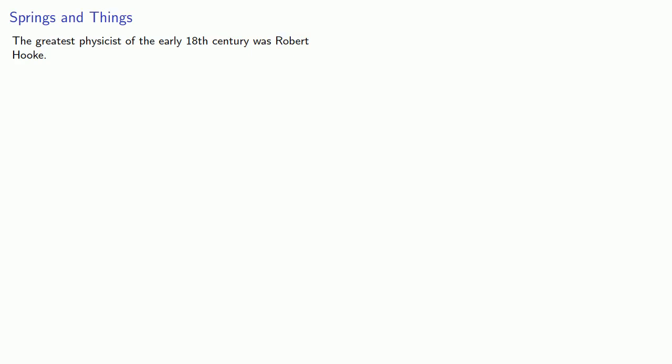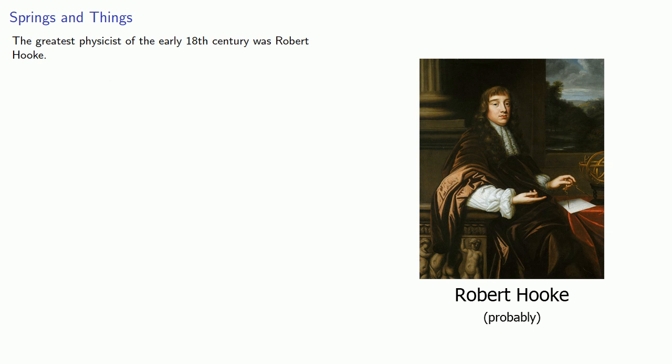The greatest physicist of the early 18th century was Robert Hooke, at least according to Robert Hooke. Hooke fought constantly with Newton over priority issues.